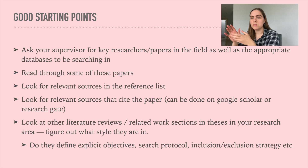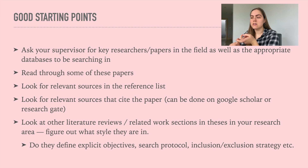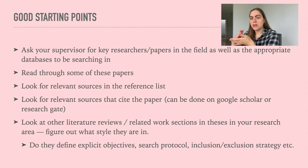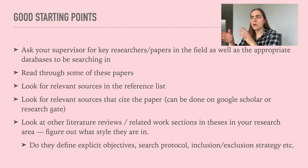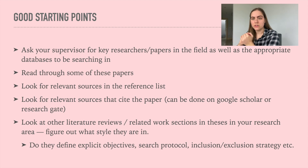Those are two great ways to get some initial papers: asking your supervisor or colleagues in the field, and then figuring out who cites those papers and who they're citing. You can also look at other literature reviews and related work sections in theses from your research area. Looking at how people in your field do a literature review is very important to understand what kind of style yours should be in.